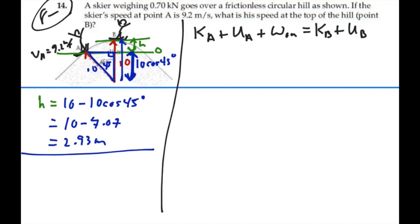Now in this case we don't have any work done along the way. It's a frictionless hill and there's no other external force other than gravity and we've already accounted for gravity by potential energy. So we don't have work done along the way to worry about.